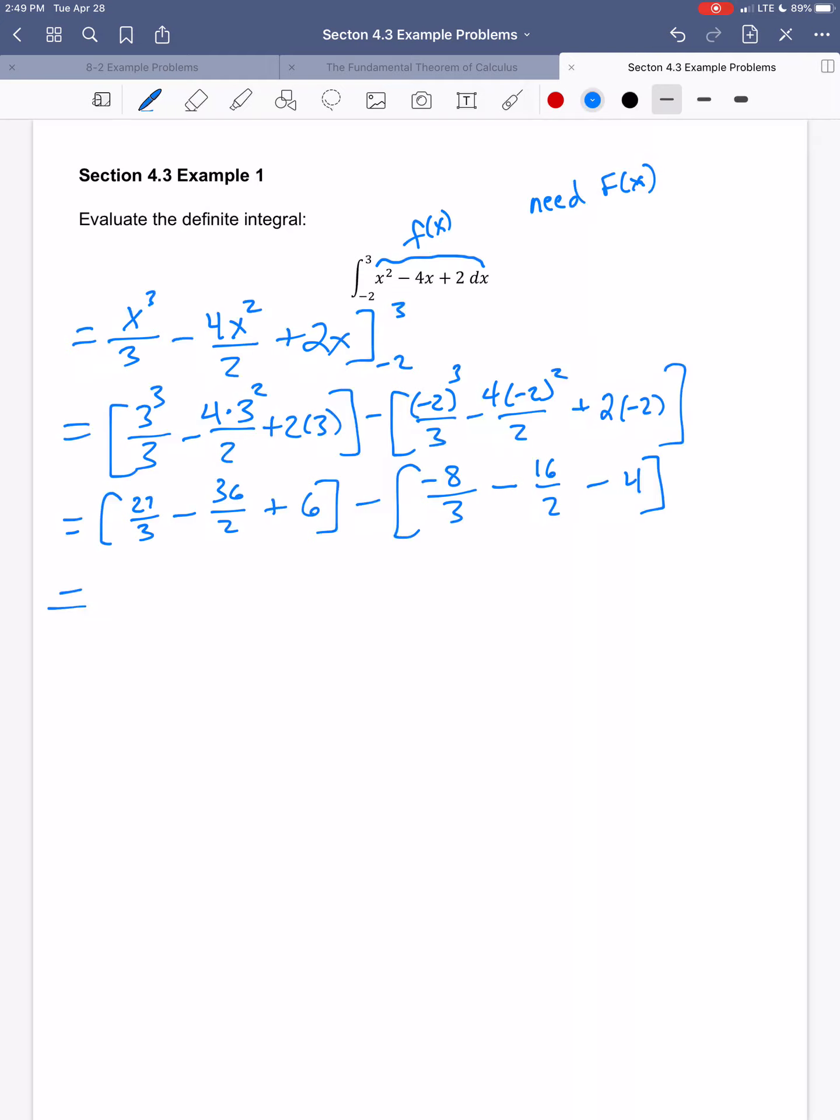So we get 9 minus 18 plus 6, minus negative 8 thirds, minus 8, minus 4. And now let's see, so 9 minus 18 plus 6, plus 8 thirds, plus 8, plus 4. Remember this minus has to get distributed to all those parts.